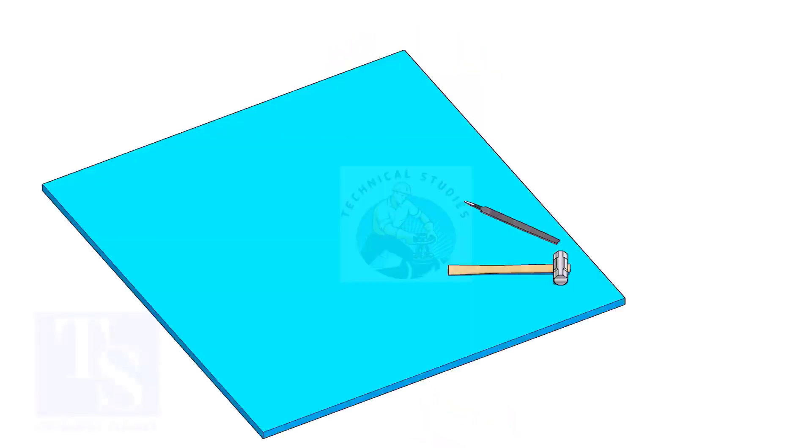The flange face may get damaged during fabrication. Use a non-metallic sheet like a Teflon sheet, thin hardboard, or piece of CNAF gasket sheet, as shown in the video.